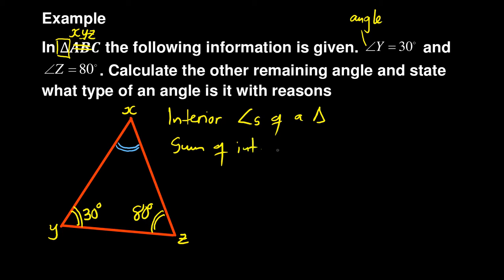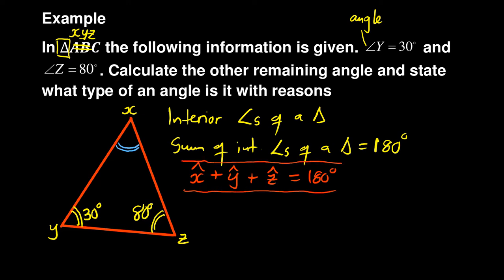...of interior angles of a triangle equals 180 degrees. Which means when you add all three angles, you must get 180 degrees. So angle X plus angle Y plus angle Z must give 180 degrees. That's what this theorem is saying. Now our angle X is the one we don't know. We're looking for angle X. Our angle Y is 30 degrees plus our angle Z is 80 degrees, equals...